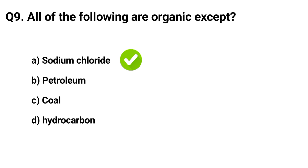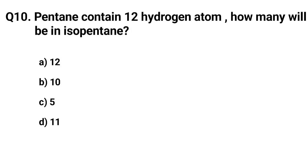Question number 10. Pentane contains 12 hydrogen atoms. How many will be in isopentane? The correct answer of that question is option A: 12.